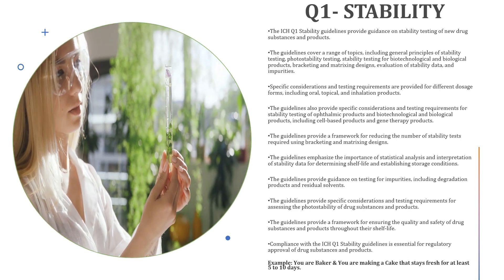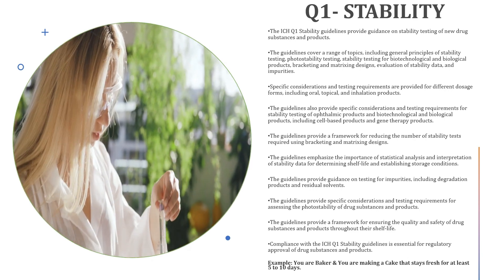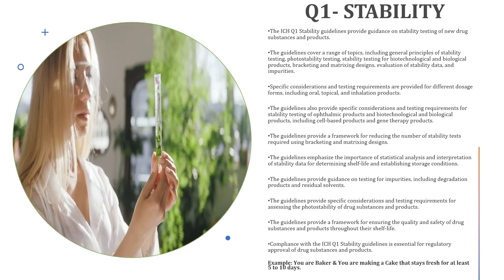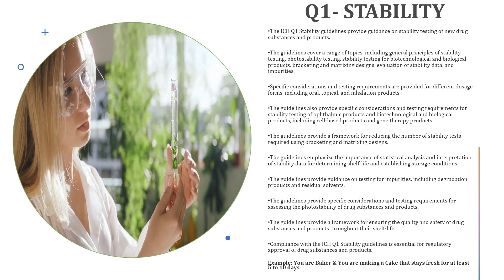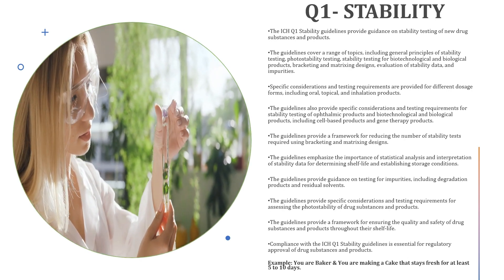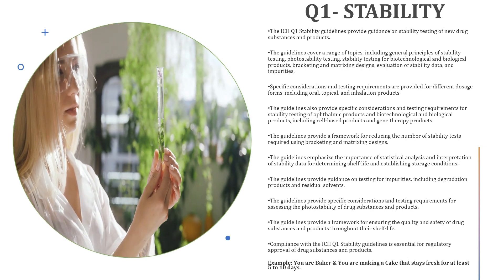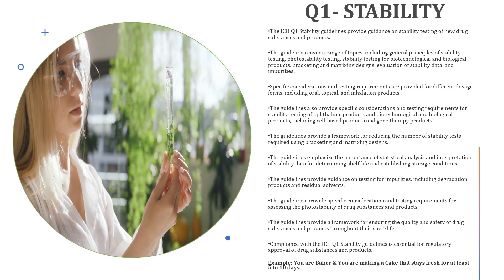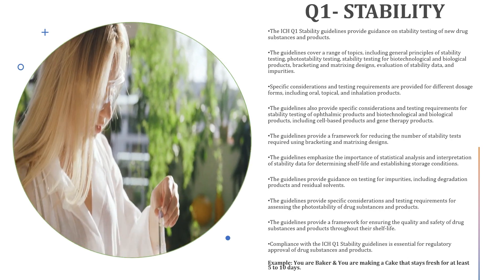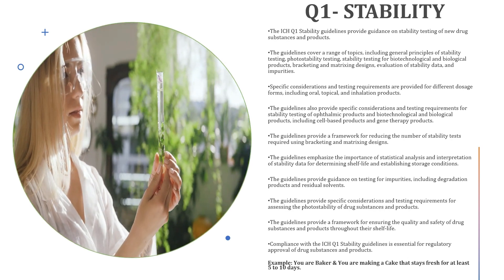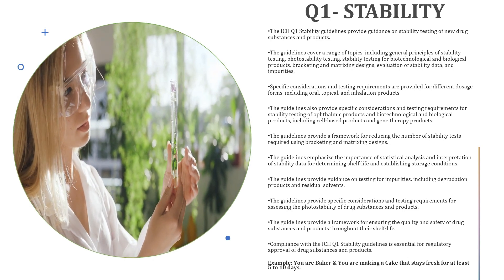Imagine you are a baker and you want to make sure your cakes stay fresh and delicious for as long as possible — the cake here being the drug dosage form like tablet, capsule, creams, etc. You want to know how long your cakes will last on the shelf and what storage conditions are best for maintaining their quality. The ICH Q1 stability guidelines are like a recipe book for you, providing guidance on how to conduct stability testing for your cake.